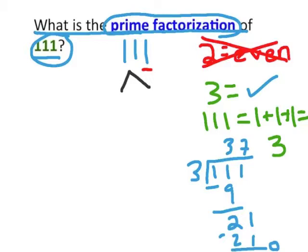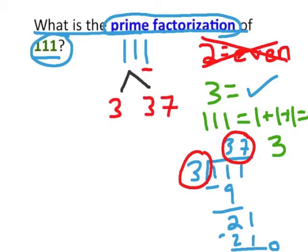So we have found two factors of 111. These two factors are 3 and 37. So, over here in our factor tree, we're going to go ahead and put 3 and 37, since 3 times 37 will give us 111.